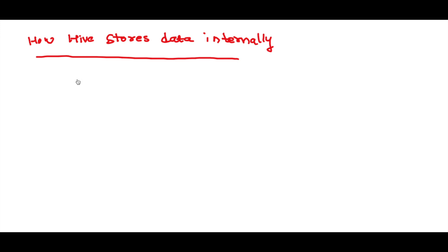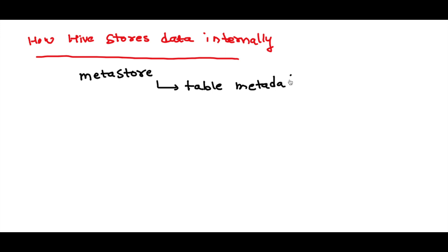Hive internally maintains a metastore. What I mean by metastore is it is metadata about your table information. Table metadata is maintained in the metastore — that includes all your table information like the table structure, the format of the data, the columns, and the data types of the columns. Every piece of metadata about the table is maintained there.